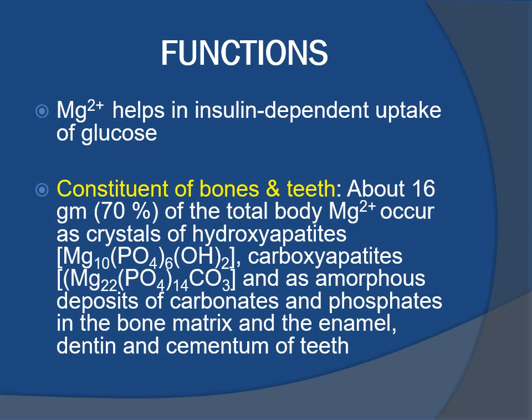Magnesium is an important component of bones; about 16 grams, or 70 percent of total body magnesium, occurs as crystals of hydroxyapatite and carbonate apatite, and as amorphous deposits of carbonates and phosphates in the bone matrix and the enamel, dentine, and cementum of teeth.